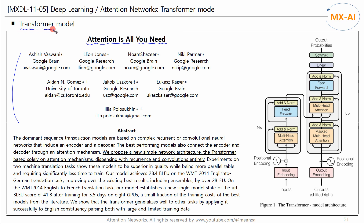Transformer has excellent performance in processing sequence data and has a fast learning speed, so it is currently widely used in machine translation, chatbots, etc. The authors proposed a new, simple network architecture — the Transformer — based solely on attention mechanisms, dispensing with recurrence and convolutions entirely. The overall structure of the Transformer consists of an encoder and decoder, just like the models covered previously.